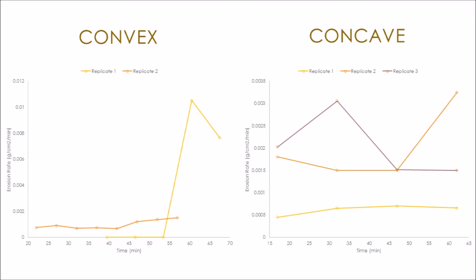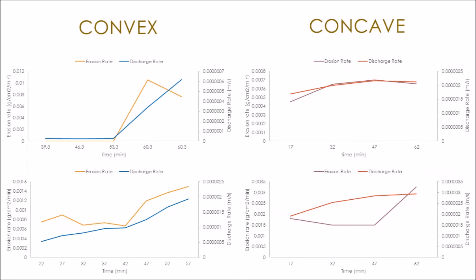Looking at the concave slope results, the data in one replicate is highly anomalous as the erosion rate increases quite steeply. In general, however, the rate of erosion increases over time in convex slopes. The concave slopes show erosion rates that stay fairly stable and constant around lower values, with replicate one significantly different from the other replicates and stable around a much lower value. The erosion rates also correlate with discharge rates, as the higher the water velocity, the more soil particles are displaced and washed away in runoff.